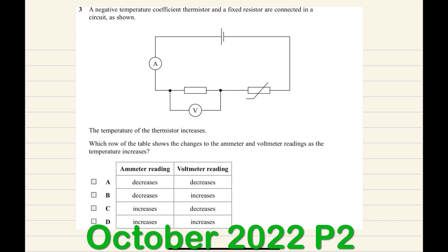Looking at the voltmeter reading again, if temperature increases, the thermistor's resistance decreases, and there is less voltage across the thermistor.